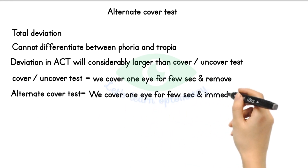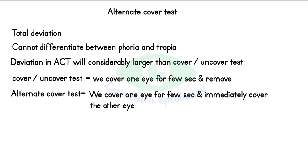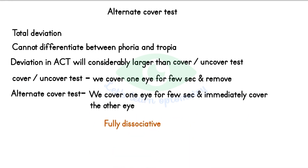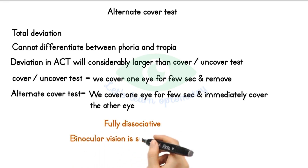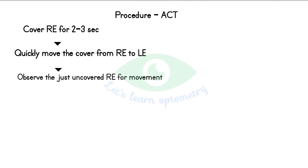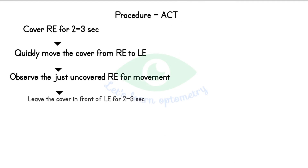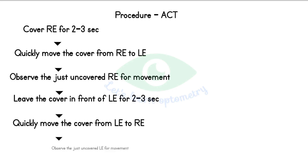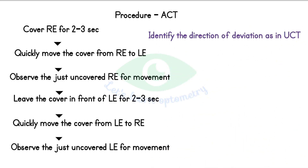The procedure is fully dissociative — one eye is covered at all times during the procedure — in order to keep fusion disrupted, that is, binocular vision is suspended altogether during the procedure. Procedure: cover the right eye for 2 to 3 seconds, then quickly move the cover from the right eye to the left eye. Observe the just-uncovered right eye for movement, then leave the cover in front of the left eye for 2 to 3 seconds, then quickly move the cover from the left eye to the right eye and observe the just-uncovered left eye for any movement. Repeat these steps several times and identify the direction of deviation.